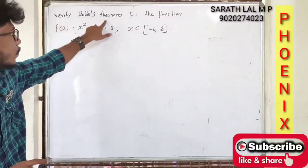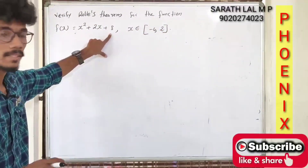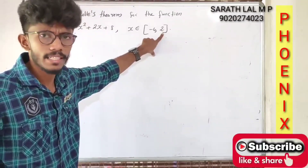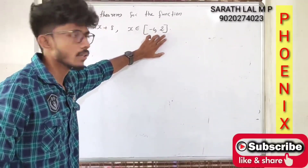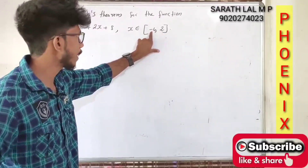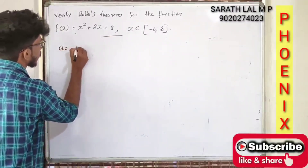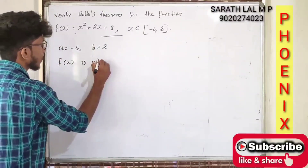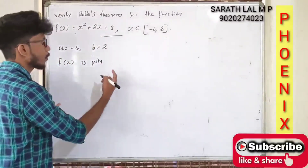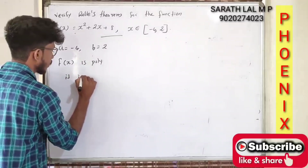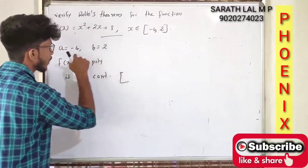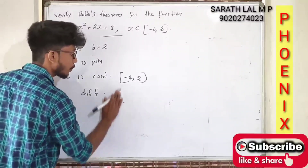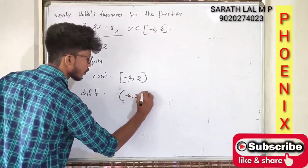Verify Rolle's theorem for the function f(x) = x² + 2x + 8 on the interval [-4, 2]. Here a = -4 and b = 2. Since f(x) is a polynomial, polynomial functions are continuous and differentiable everywhere. So f is continuous in closed interval [-4, 2] and differentiable in open interval (-4, 2).